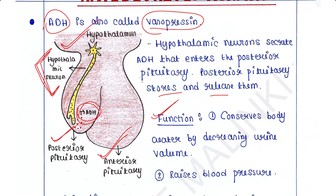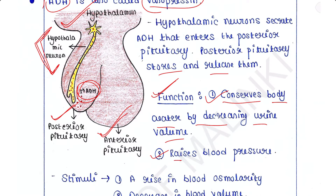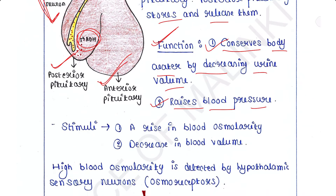ADH has two main functions in our body. First, it conserves body water by decreasing urine volume. Second, it raises blood pressure. Two major stimuli promote ADH secretion: a rise in blood osmolarity and a decrease in blood volume.